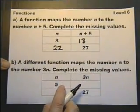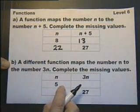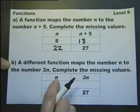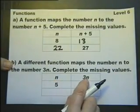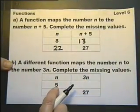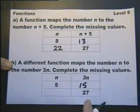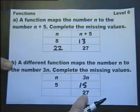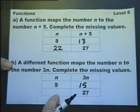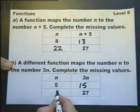Part B. A different function maps N onto the number 3N. So N maps onto 3 times N. So if N is 5, 3N must be 15, 3 times 5 is 15. And working back the other way, if 3N is 27, N itself must be 27 divided by 3.